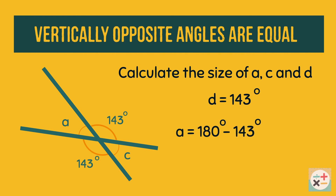We can also calculate angle A knowing the rule that angles on a straight line add up to 180 degrees. Finally, as angle C is vertically opposite the 37 degree angle, it is also equal to 37 degrees.